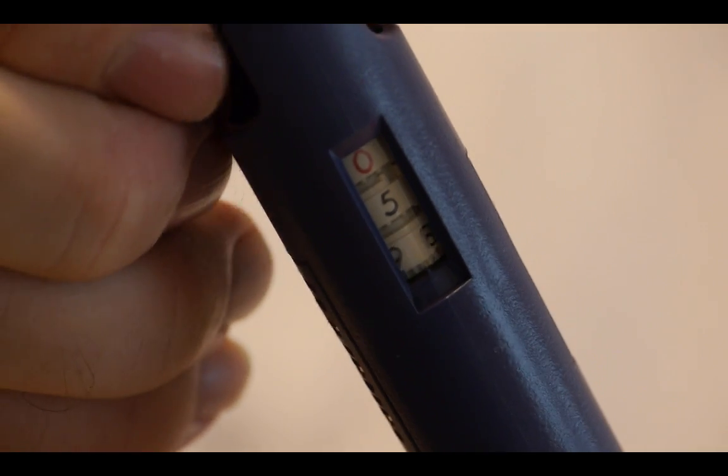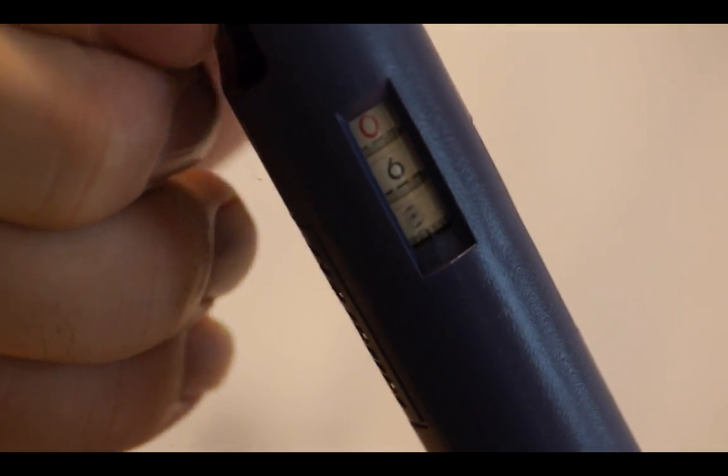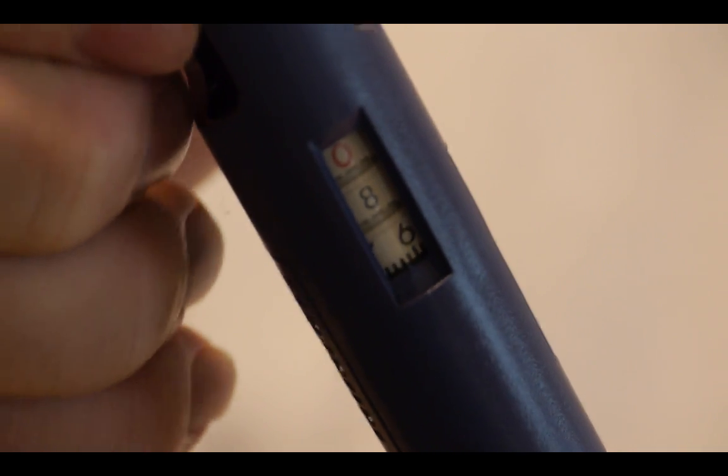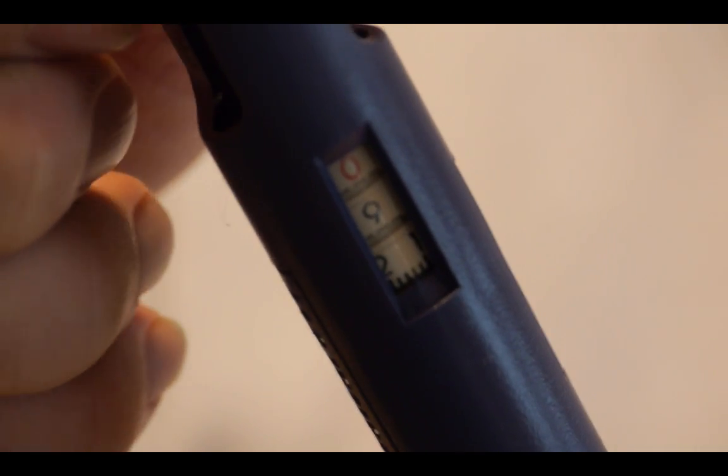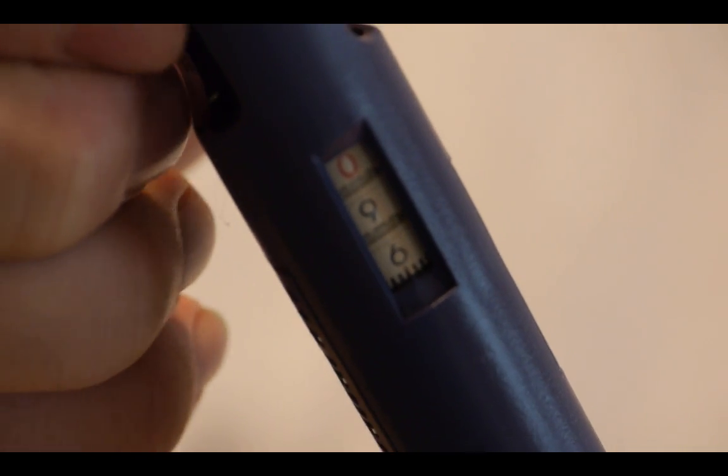The P1000 can be set to the desired volume by rotating the black wheel at the top. Here we are setting it to 1 ml. The P1000 will read 100 when at 1 ml.